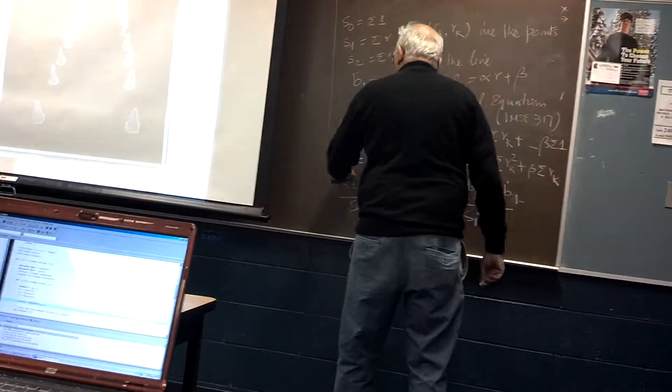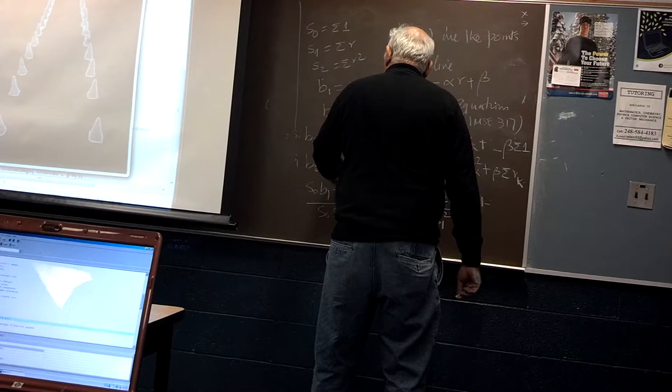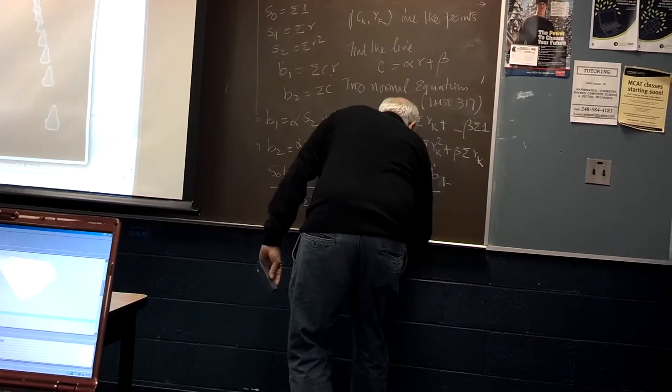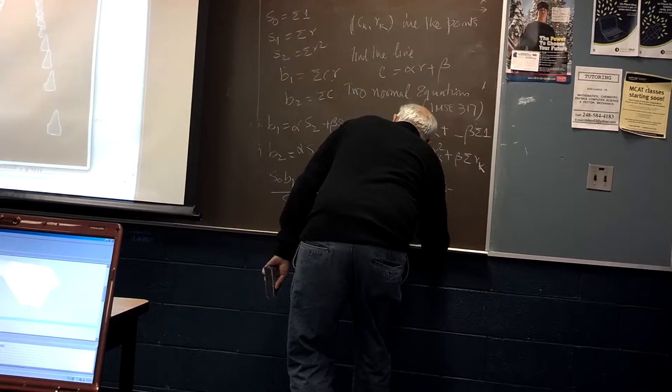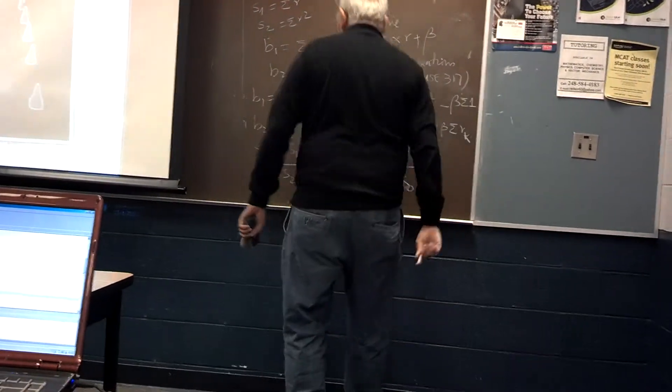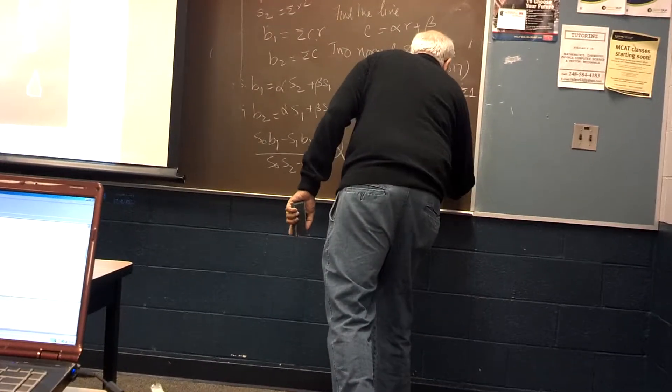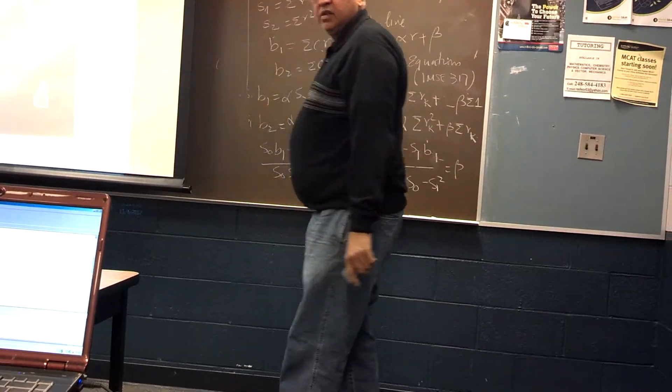Then we do S2 B2 minus S1 B1. If I do S2 B2 minus S1 B1, this becomes, that goes away, so it's going to be S2 S0 minus S1 squared. So that's your beta. So I've got to program this.